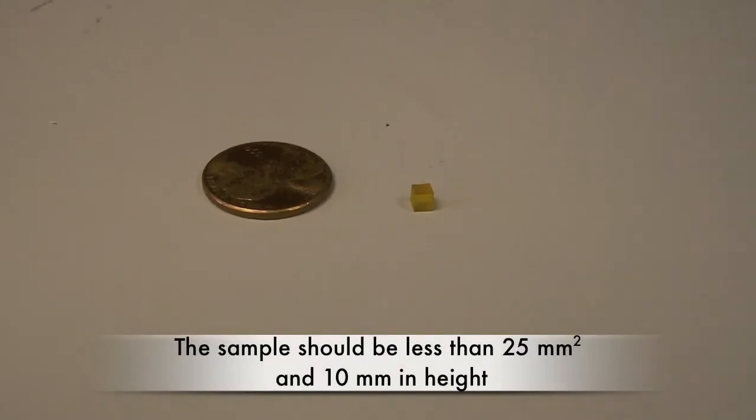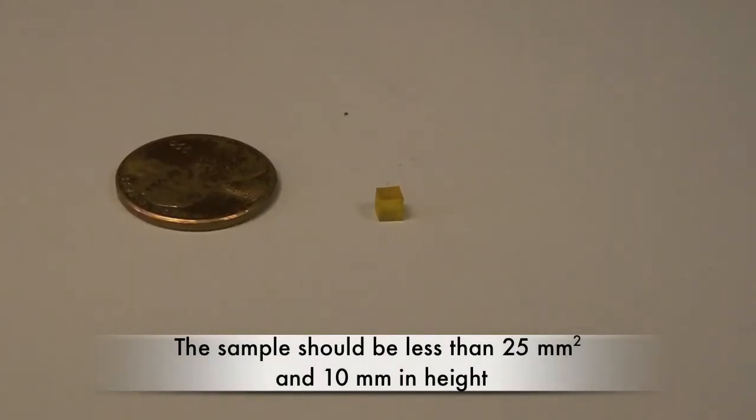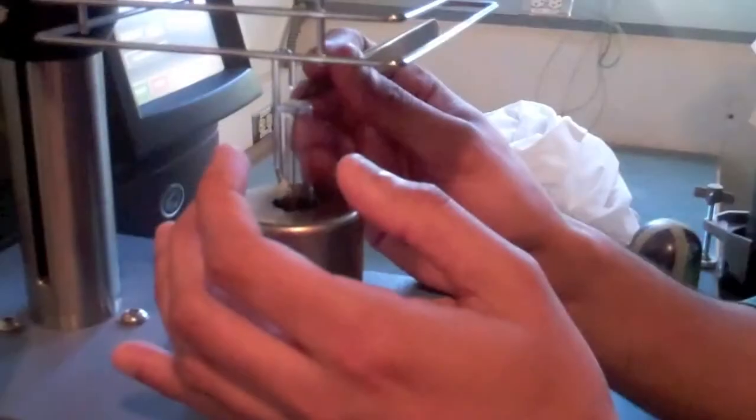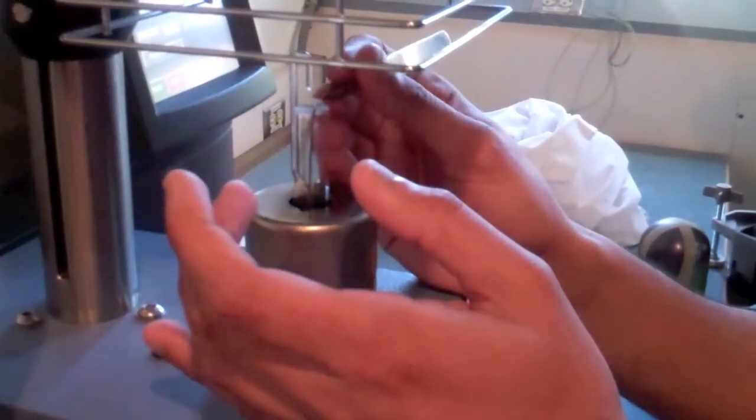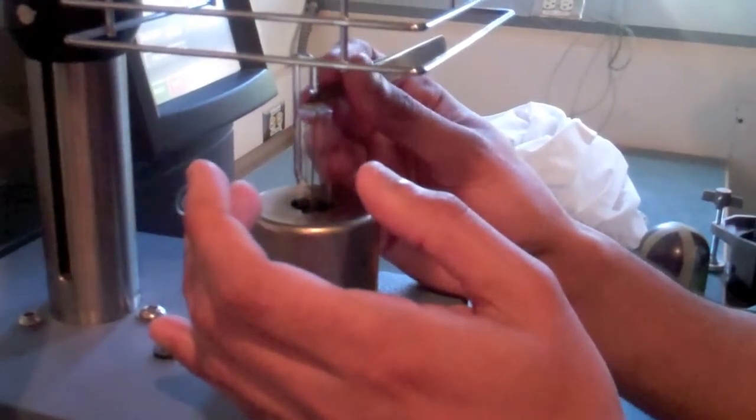The sample should have a surface area of no more than 25mm squared and a height between 2 and 10mm. Make sure the sample does not cover up the thermocouple as this may affect the thermal profile. A sample with a fairly flat surface for the probe is preferable.